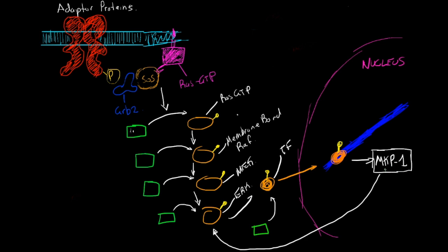A MAP protein, I just want to discuss really quickly, is something that can trigger mitosis. So this is activated during cell division. And I also wanted to discuss really quickly these right here, starting from the membrane bound RAF.